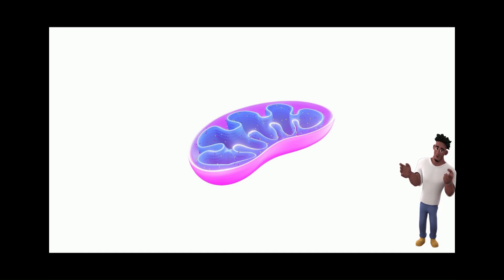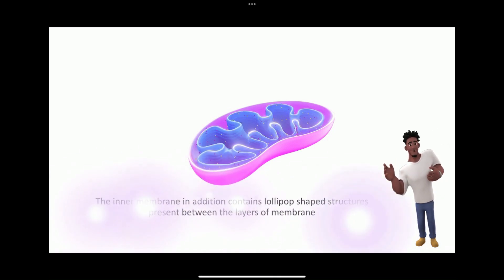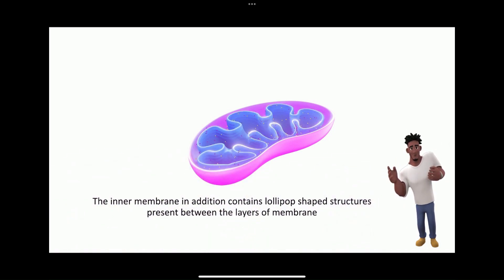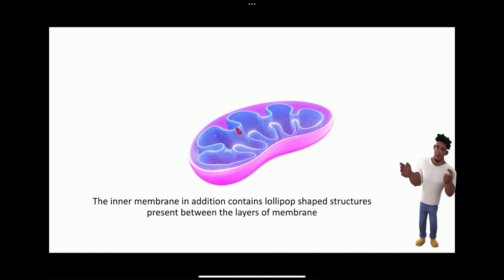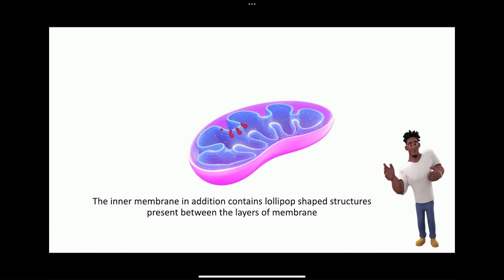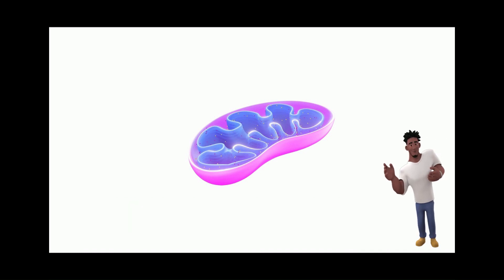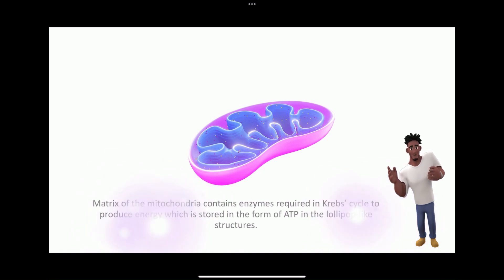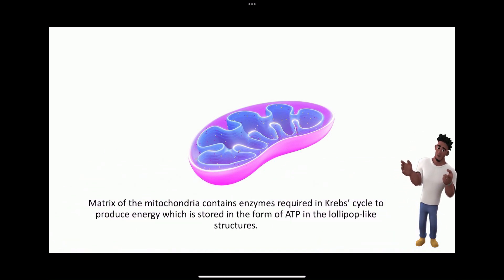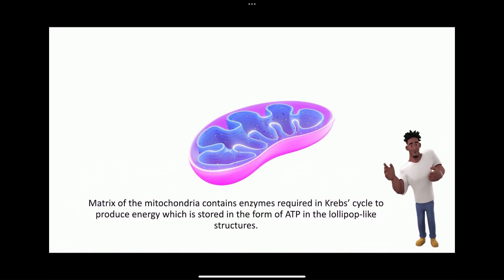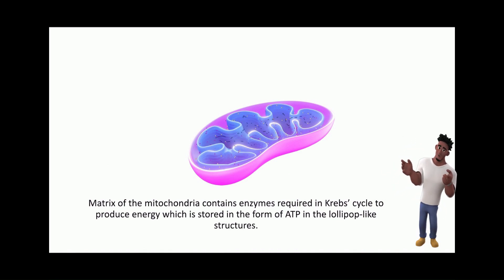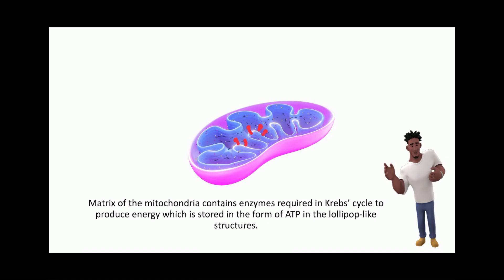The inner membrane in addition contains lollipop-shaped globular structures. The matrix contains enzymes required in the Krebs cycle, by which products of carbohydrate, fat, and protein metabolism are oxidized to produce energy, which is stored in the form of ATP in these lollipop-like globular structures.